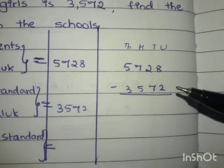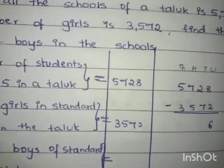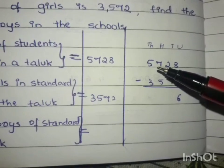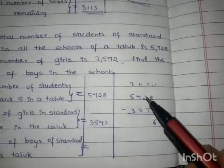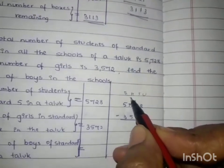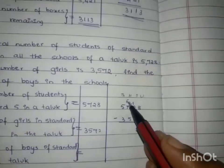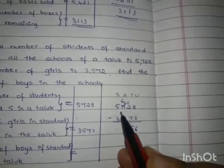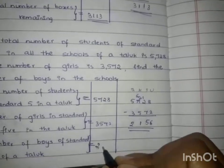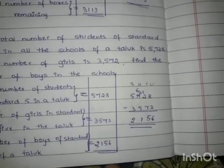Let us start subtracting from the units. 8 minus 2 will be 6. Next: 2 minus 7 — here 2 is smaller than 7, so I have to borrow 1 from the hundreds. The number in the hundreds is 7; borrowing 1 makes it 12, and 7 becomes 6. So 12 minus 7 is 5. Then 6 minus 5 is 1. At the end, 5 minus 3 is 2. Our answer is 2,156. The total number of boys in a Taluk in class 5 is 2,156.